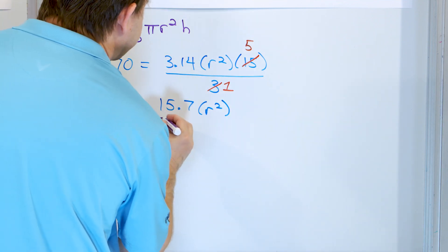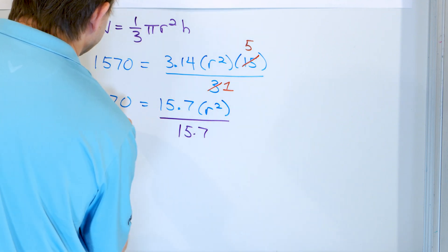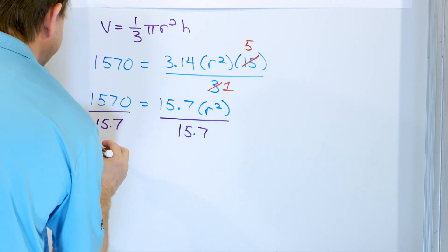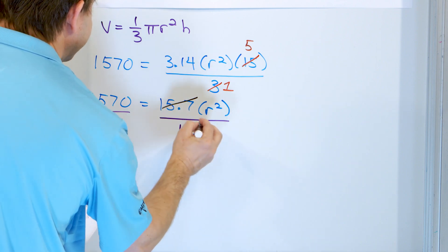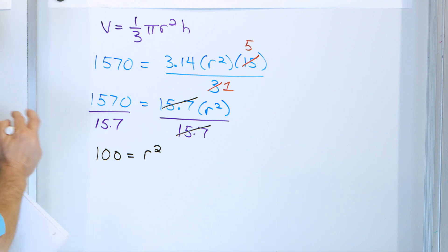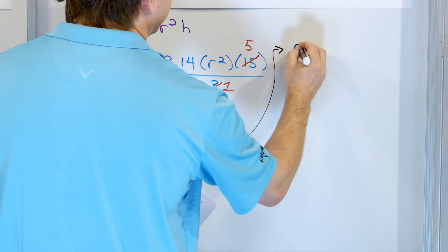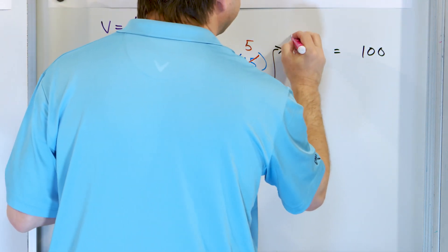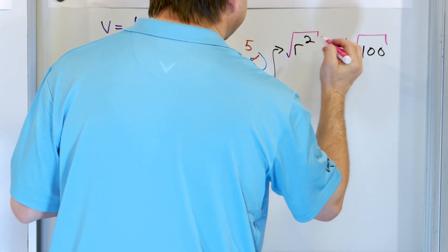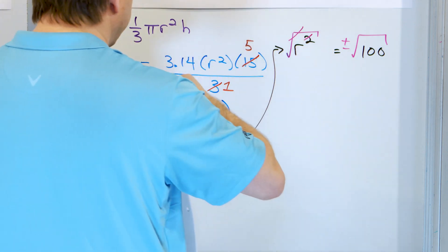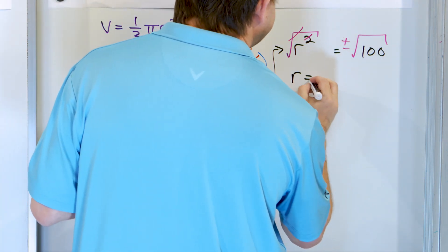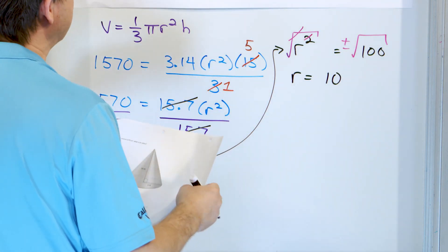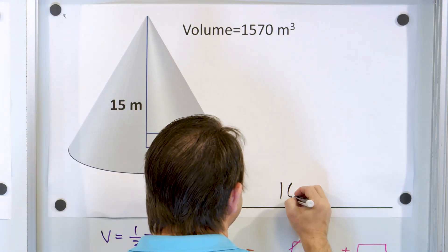I want to solve for r, so I need to get rid of 15.7. I'll divide both sides by 15.7. When you take 1,570 divided by 15.7, you'll get exactly 100. On the right, these numbers cancel and you're left with r squared. So r squared equals 100. I have a square on the variable, so I undo it with the square root on both sides, adding plus or minus. The square root cancels the square, and the radius equals 10 — because the square root of 100 is 10 — and we only keep the positive answer. The units are meters, so it's 10 meters.